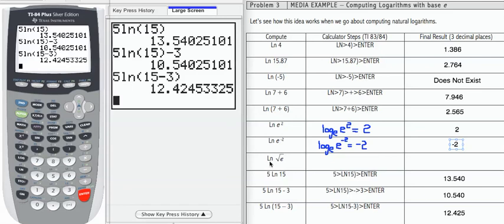Our last one: natural log of the square root of e. We learned in a previous lesson that the square root is the same as the 1 half power. So log base e of e to the 1 half equals 1 half, because the base e raised to the half equals e to the 1 half. So our answer for natural log of square root of e equals 1 half.